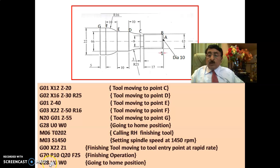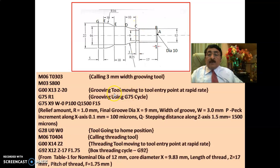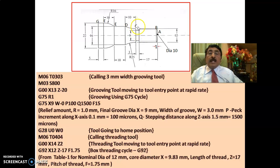After finishing, the tool goes to home position via G28, U0, W0. Then tool 3 — the grooving tool — is called with M06, T0303. The spindle speed during grooving is 800 rpm. The grooving tool comes rapidly to G00, X13, Z-20. The tool width is 3 mm and the groove width is also 3 mm, so the tool aligns to the left and positions at X13, Z-20.